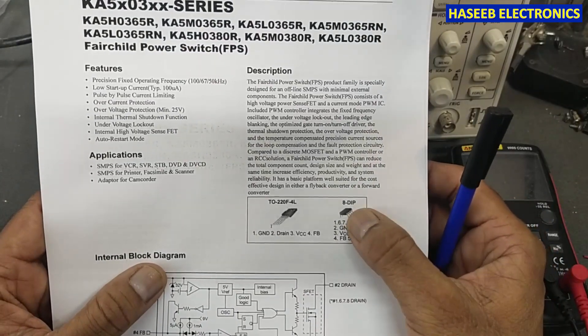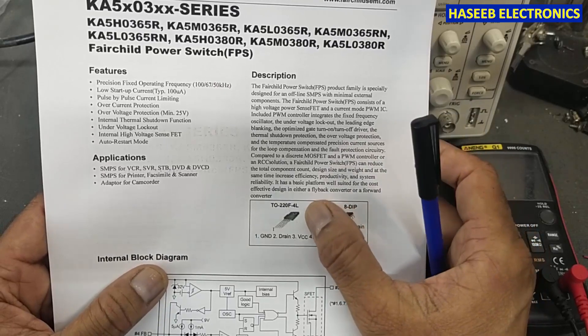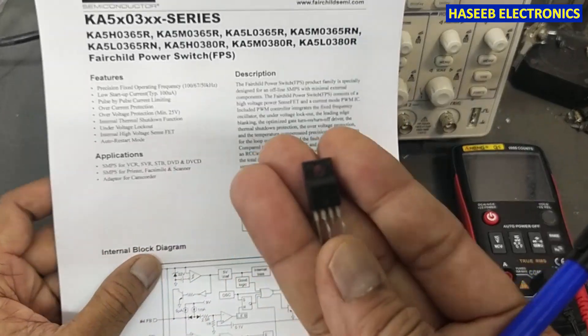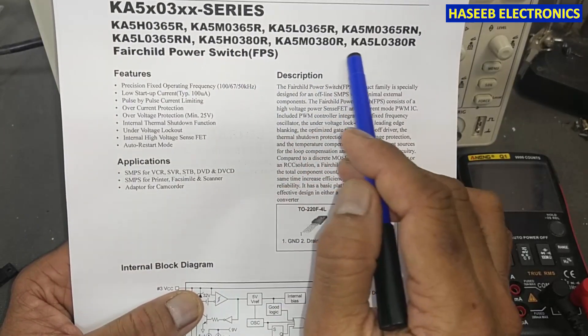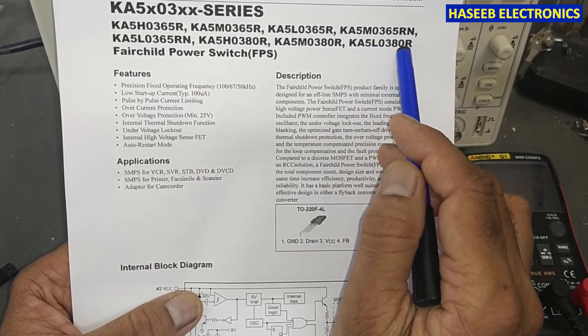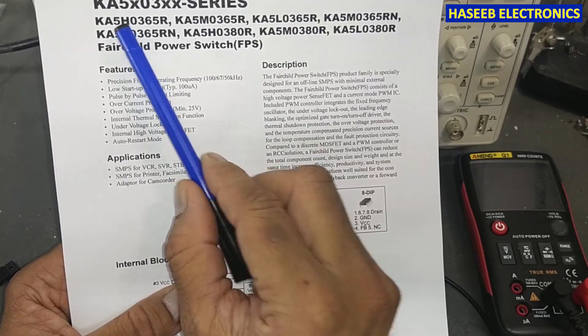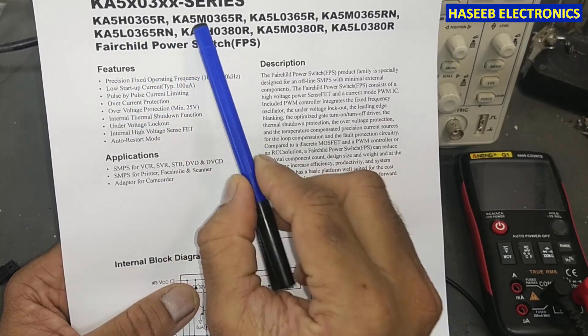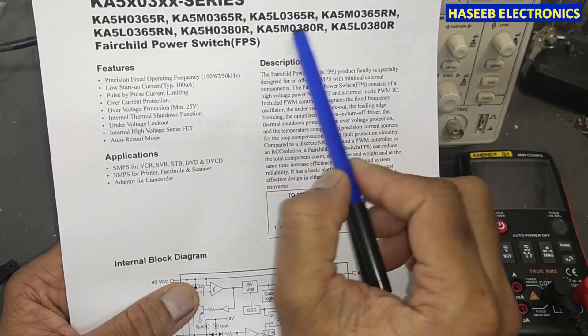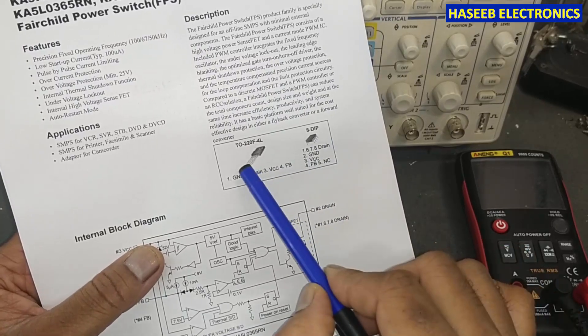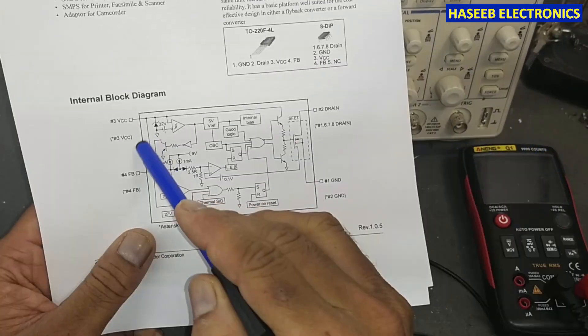It is in DIP package and it is in TO-224L package. We are discussing 5L0380, so we will discuss just only one IC: L0380R. It is 167 and 50 kilohertz. H is 100, M 67, and L 50 kilohertz.